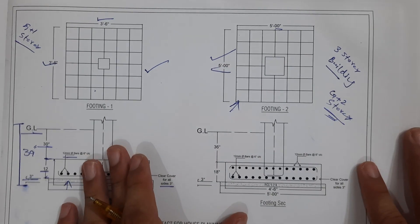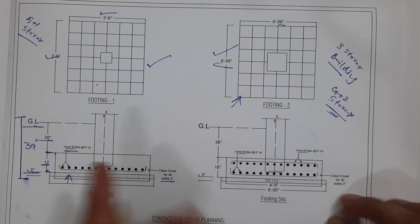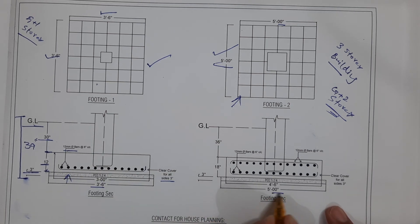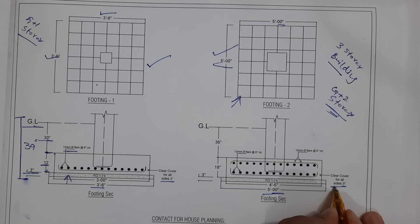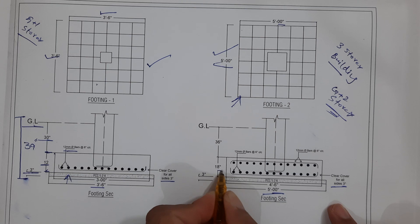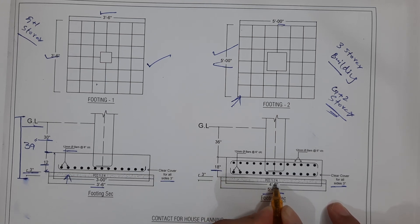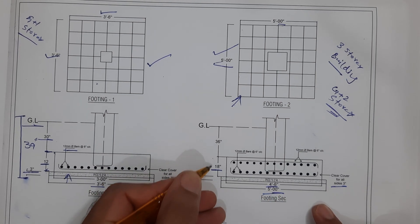Both footings are individual footings; only the size and steel reinforcement differ. The width is five feet with three inches concrete cover on all sides — bottom, left, top, and right. The bed depth is 18 inches, and the PCC is 1:2:4 with a width of four feet six inches.